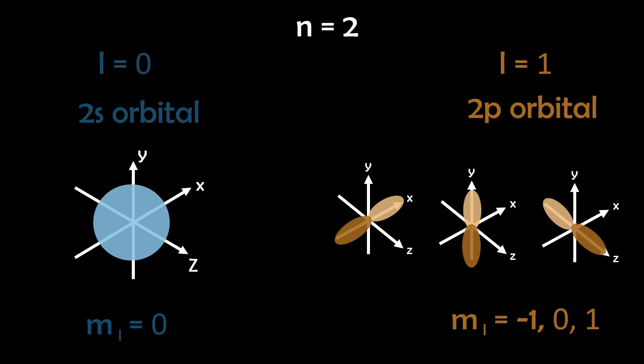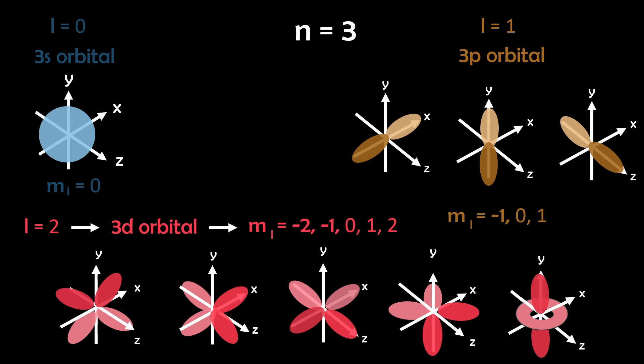At the n equals three level, things expand further. We see the 3s orbitals where L equals zero, and the 3p orbitals where L equals one with three possible configurations. Here the orbitals increase in size and energy. But we also encounter the 3d orbitals where L equals two, which represents five unique configurations, reflecting more ways electrons can be arranged.